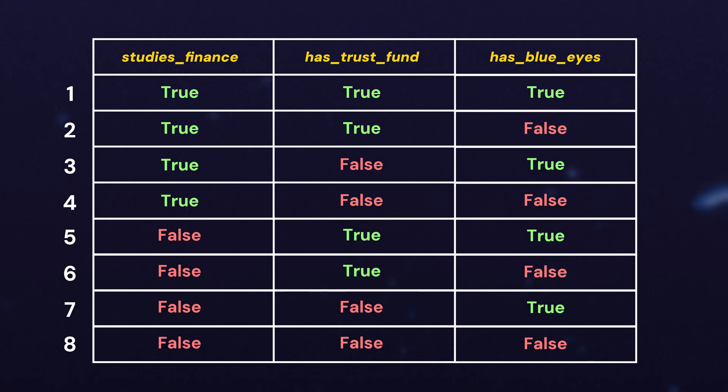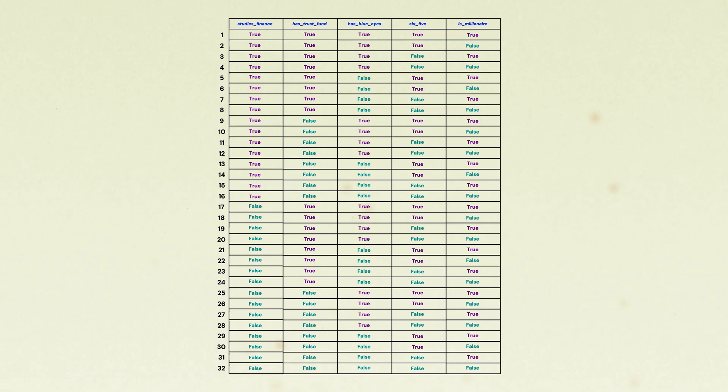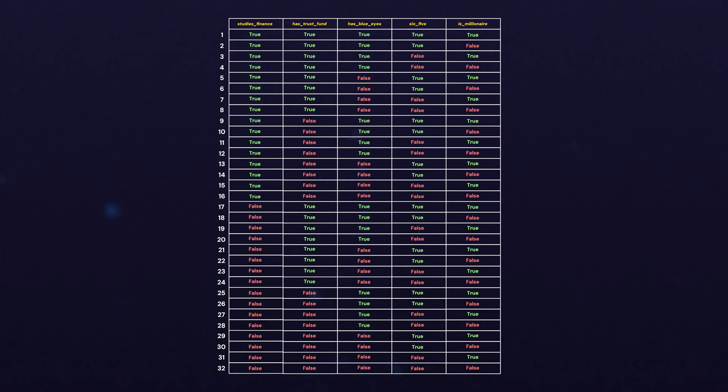If we add another, we get 16. And if we go up to five, then we get a total of 32 combinations. And if we add a string into the mix instead of a Boolean, then the number of total possible values essentially goes up to infinity, because a string can contain any number of combinations of characters.